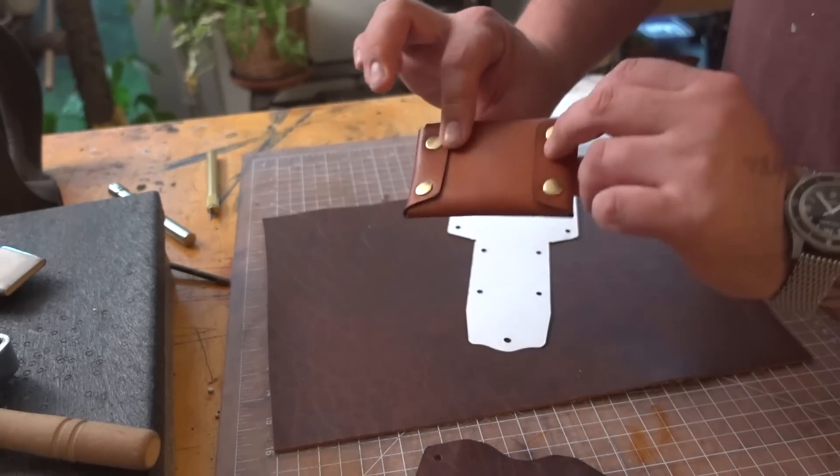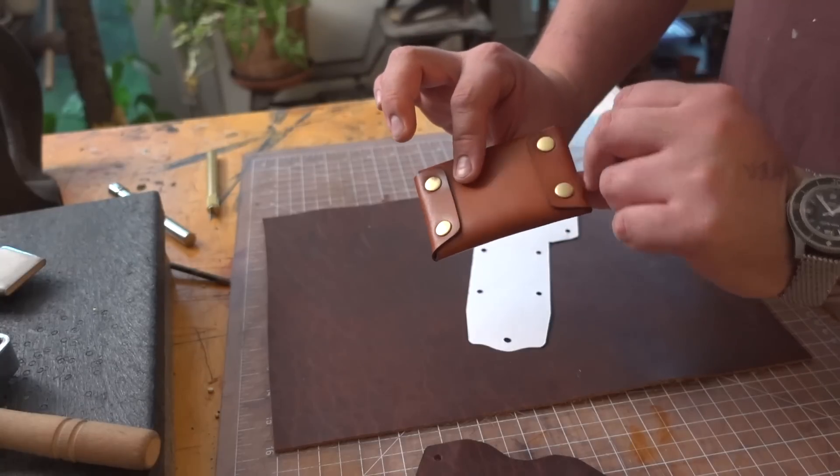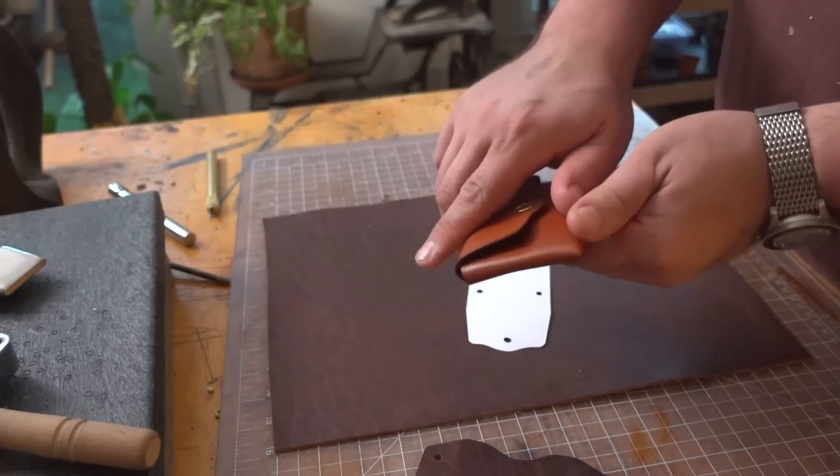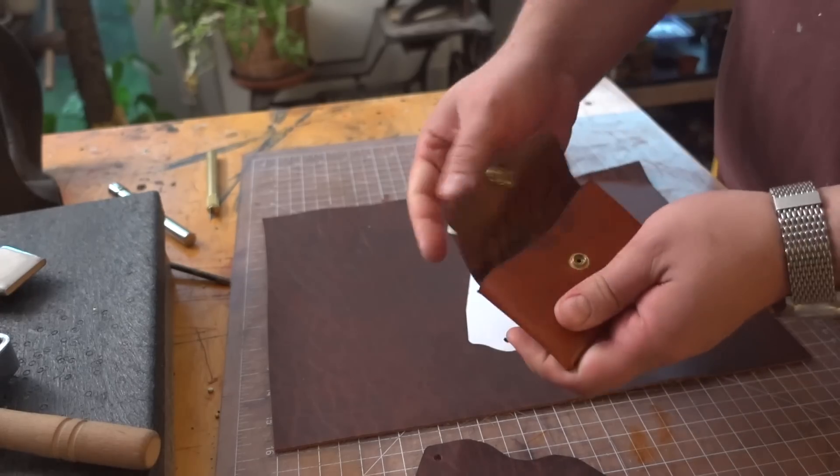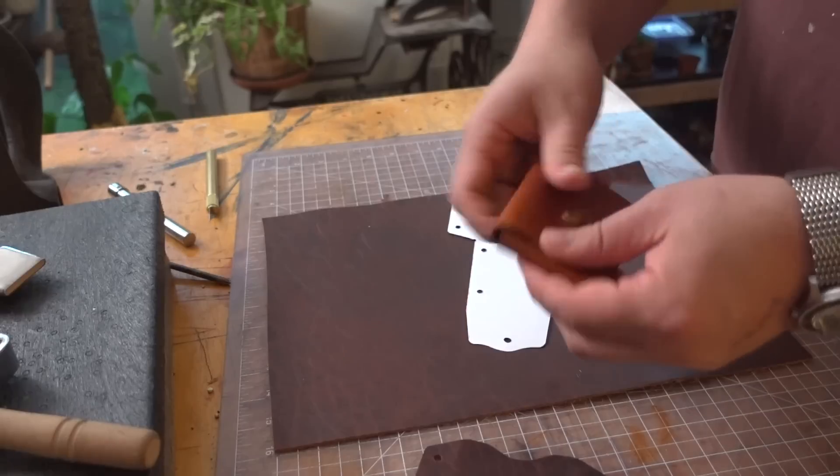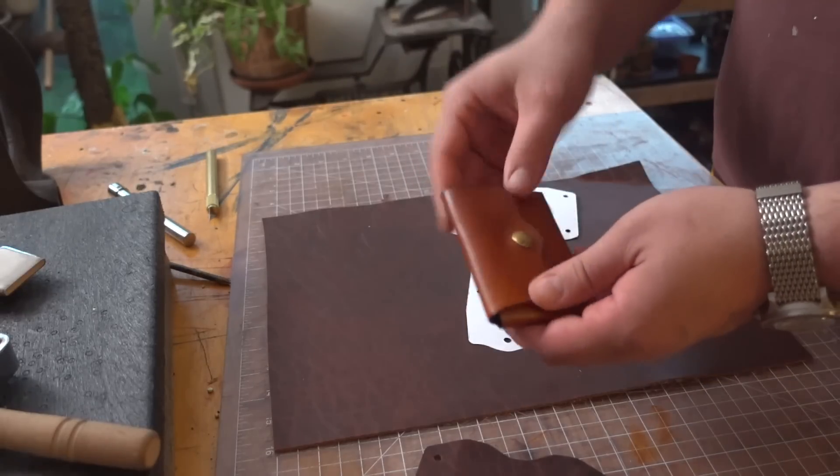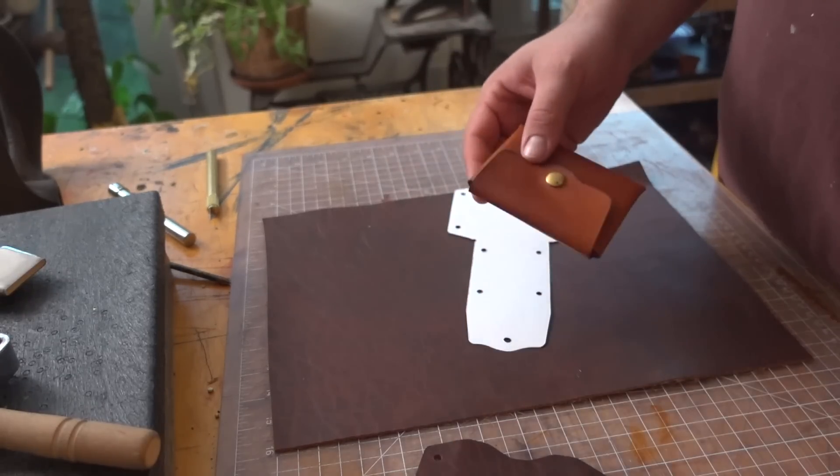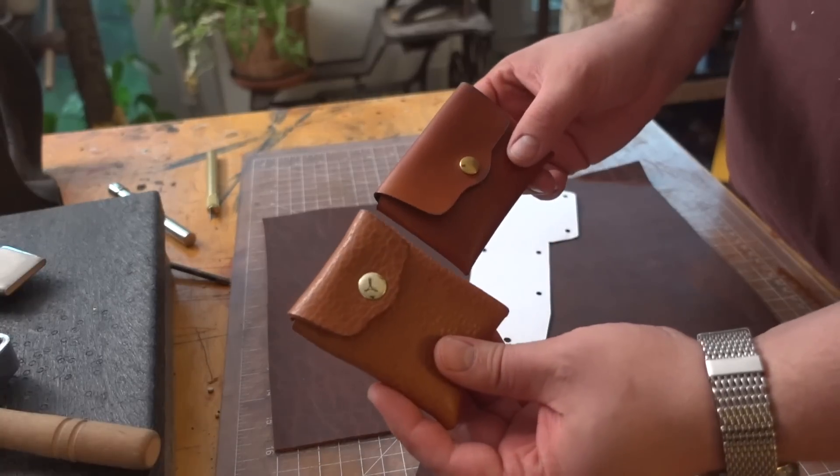This piece is the vertical companion to the riveted wallet that we did in support of Tyler from HFA Goods. We raised money for him running the Boston Marathon. He doesn't need it anymore because he raised his money, so he was like, hey you can take the pattern back. I was like okay, I want to have a vertical version to go with it.